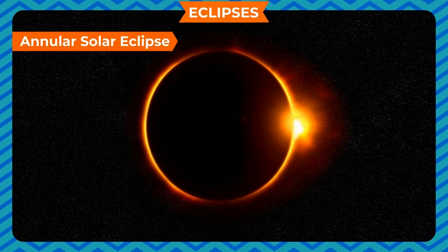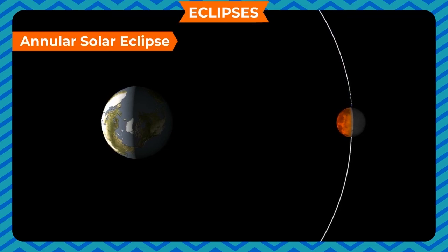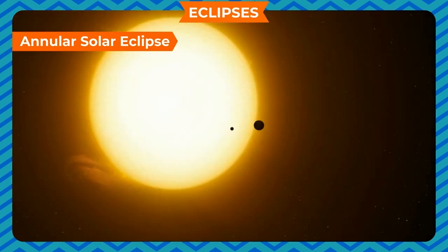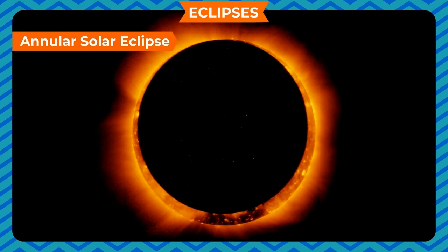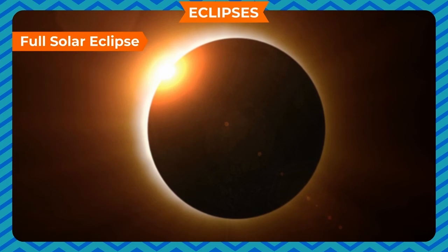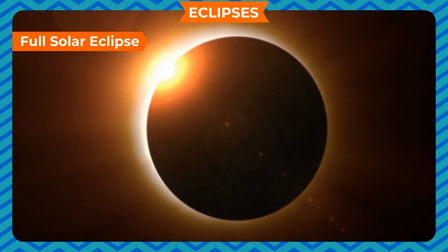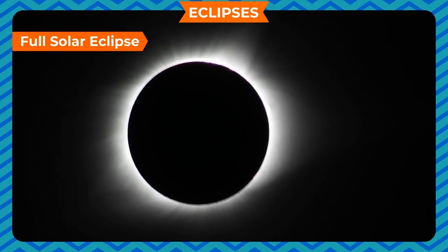Annular solar eclipse — when the sun and the moon line up completely and either the moon is away from the earth or the earth is closer to the sun, the moon appears smaller in size than the sun and a ring-shaped or annular shining portion of the sun is visible from the earth. This is called an annular solar eclipse. Full solar eclipse — when the moon completely obscures the bright light of the sun and no sun is visible from the earth. This is called a full solar eclipse.